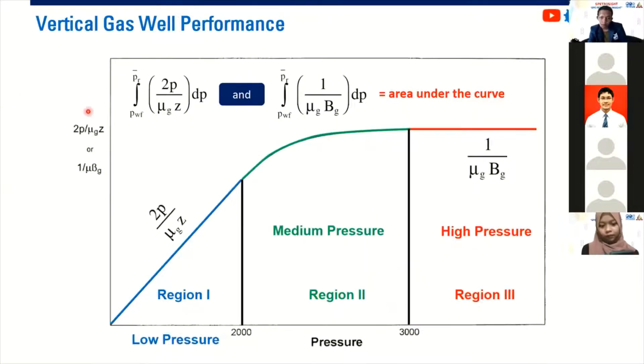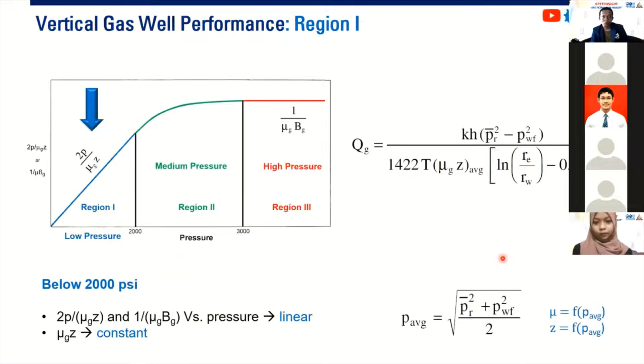And then we can plot it. This term plotted against pressure. If we have, if we plot it this way, we can find, we can observe three regions: low pressure region, medium pressure region, and then high pressure region. We can focus on each region. Region one, the low pressure region, it's actually by some experts it is below 2000 psi.